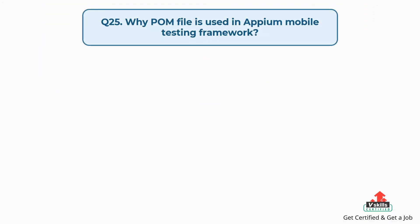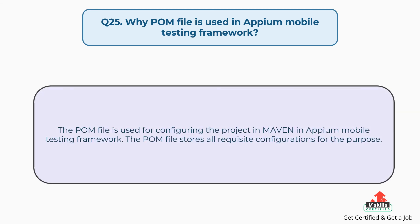Question number 25: Why is the POM file used in Appium Mobile Testing Framework? The POM file is used for configuring the project in Maven in the Appium Mobile Testing Framework. The POM file stores all requisite configurations for the purpose.